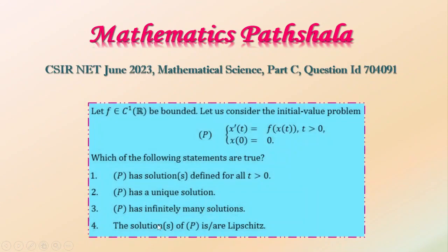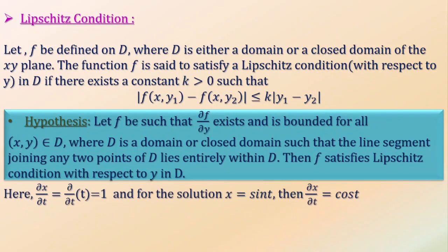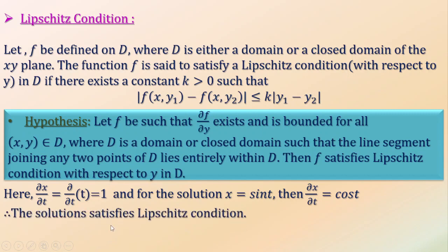For our first example, ∂x/∂t equals 1 which is bounded, so the Lipschitz condition is satisfied. For the second example we get x equals sin(t), then ∂x/∂t equals cos(t) which is also bounded. So in both examples ∂x/∂t exists and is bounded. So Lipschitz condition is satisfied in both solutions. Thus option 4 is also true.